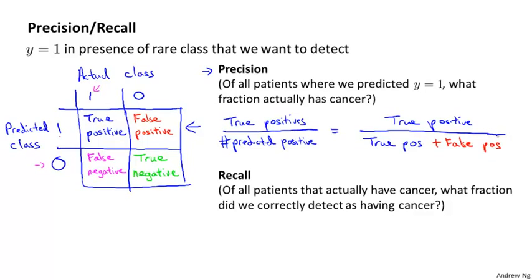That's called precision. High precision would be good — it means that of all the patients we told 'we think you have cancer,' most of them we had actually made accurate predictions on and they do have cancer.